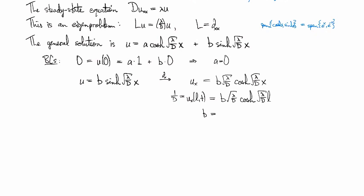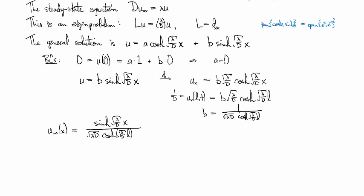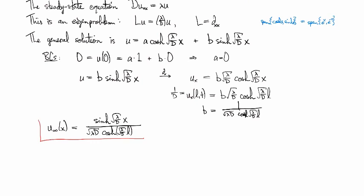So b is going to be, let's see, so square root of lambda d times cosh of root lambda over dL in the denominator. And so then your steady state solution is going to look like sinh root lambda over d x divided by root lambda d, cosh root lambda over d times l. And there you have it, warts and all. Like I said, it's not pretty, but oh well.